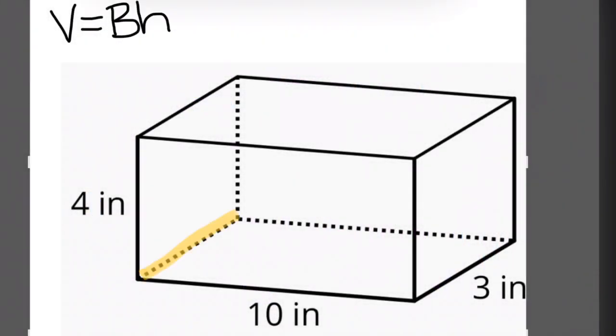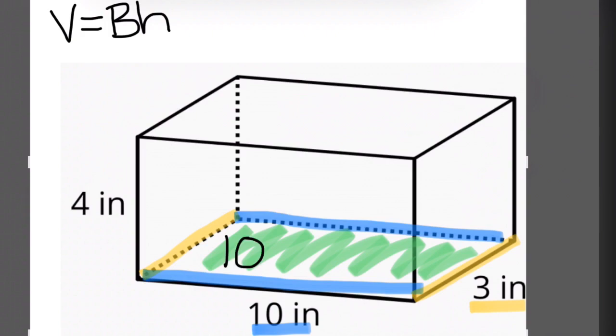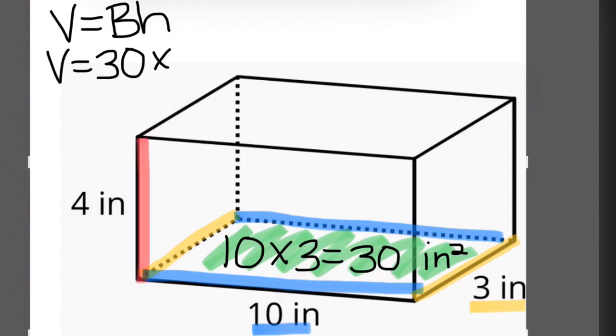So let's try capital B times H. Let's identify the base. Three by 10, which gives us 30 inches squared. Now let's find the height, multiply by the height, and we get 120 inches cubed.